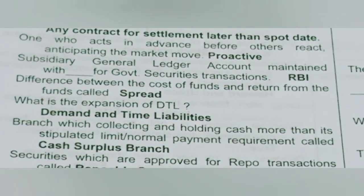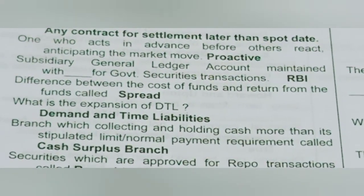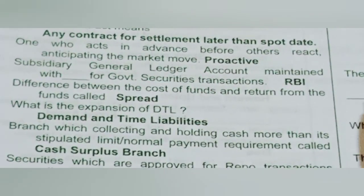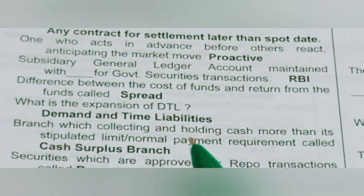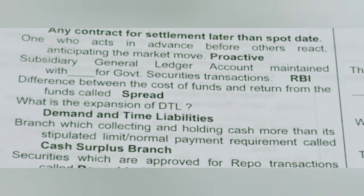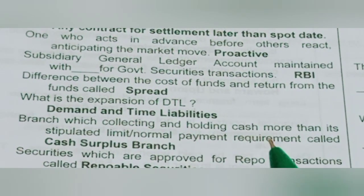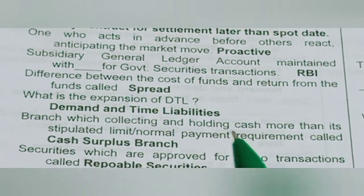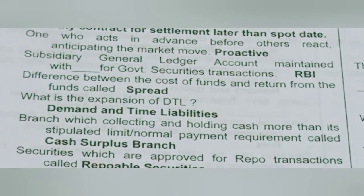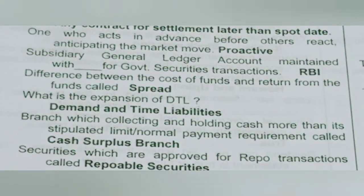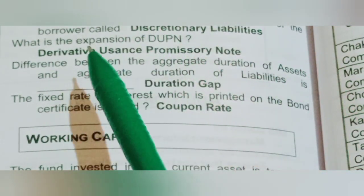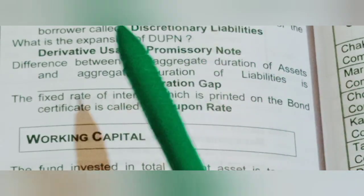What is the expansion of DTL? Answer: demand and time liabilities. A branch which is collecting and holding cash more than its stipulated limit or normal payment requirement is called a cash surplus branch. Securities which are approved for REPO transactions are called REPOable securities.